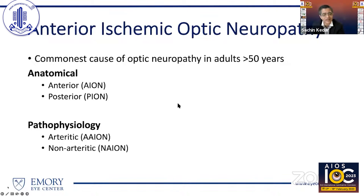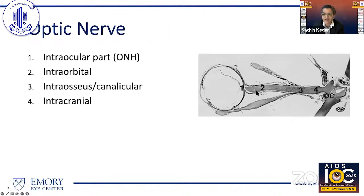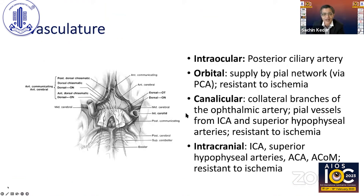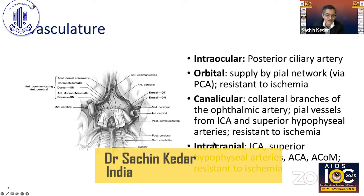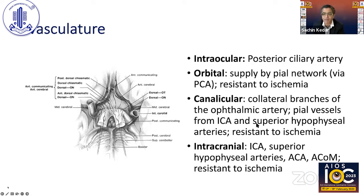Anatomically, you can differentiate them into the anterior variety where you see disc swelling and the posterior variety where you do not see disc swelling. Pathophysiologically, they can be caused by inflammation and are called the arteritic type, or they can be the non-arteritic type, which is more common. The optic nerve is divided into four segments. The intraocular part primarily causes anterior ischemic optic neuropathy because of a tenuous blood supply to this region, whereas the orbital, canalicular, and intracranial parts are supplied by a rich pial network, making them resistant to ischemia due to multi-source blood supply.